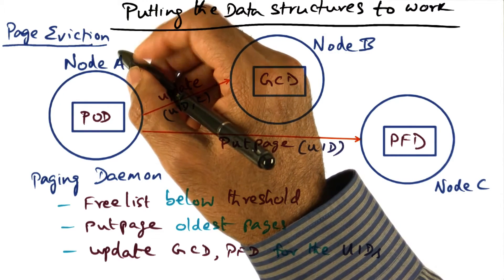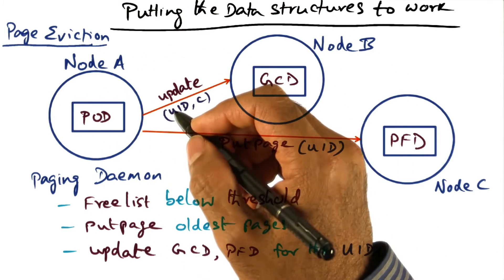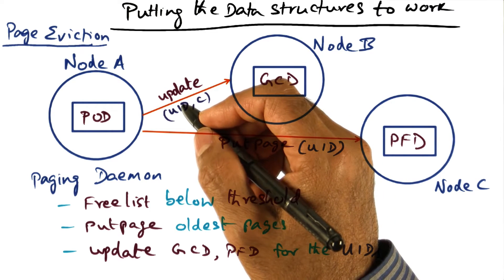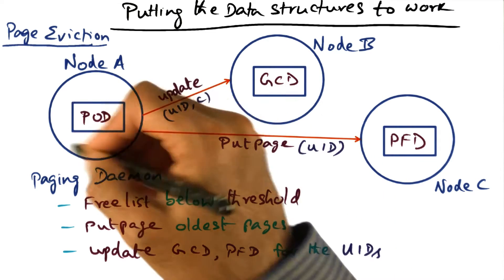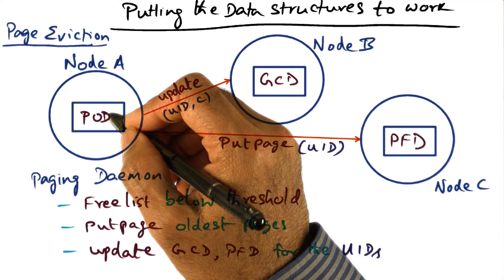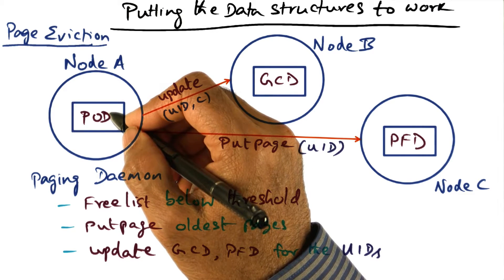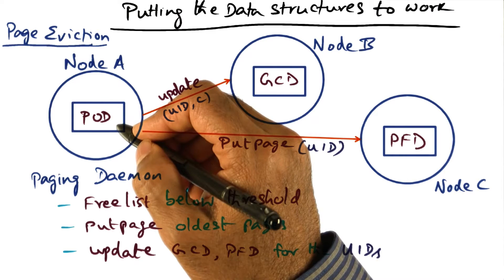The next thing I want to talk about is what happens in the system on page evictions. On page eviction, when a node decides that it wants to throw out a page, it sends it — using the algorithm I described — to the candidate node for hosting that page. It might use the weight information to make the decision of which node to send the page it is discarding.